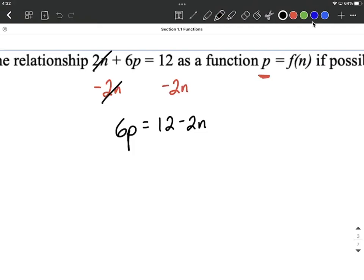Now we still don't quite have p on one side by itself, but you'll notice that p is connected with a 6 with multiplication. So we want to counteract that multiplication and divide both sides by that 6 to eliminate it. This will put p on one side all by itself, so we could say that's 12 minus 2n all divided by 6.